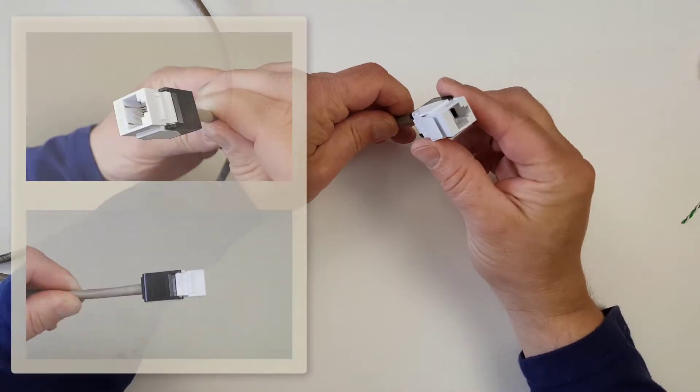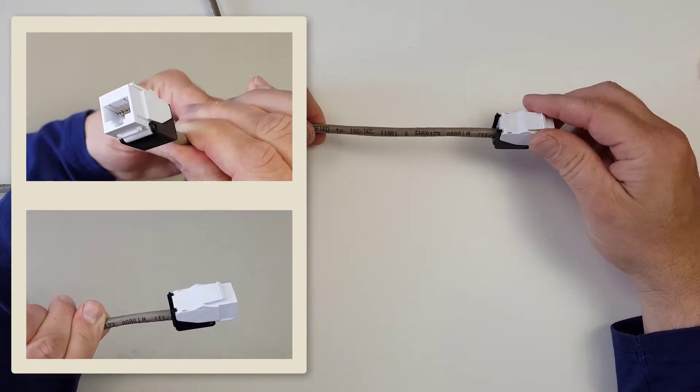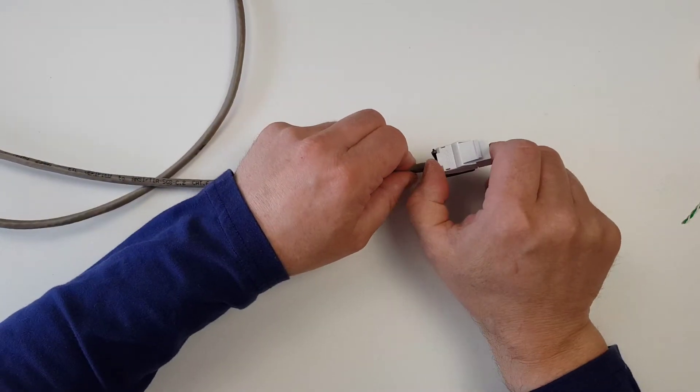Okay so that is the termination of a Dintec Category 6 Solid Core UTP cable onto the Dintec Toolless Cat 6 Jack.